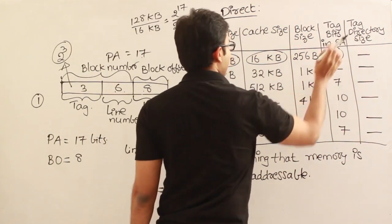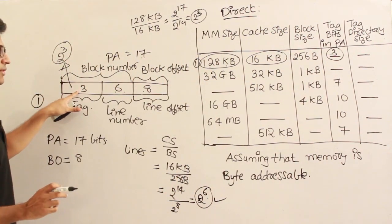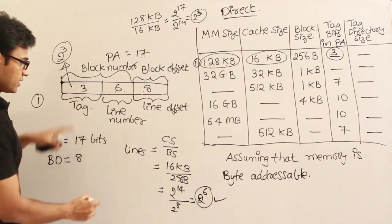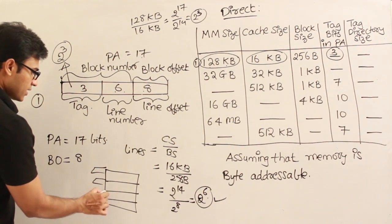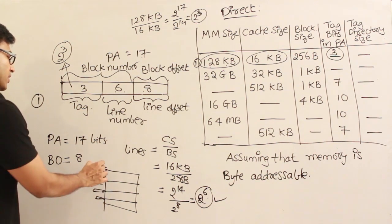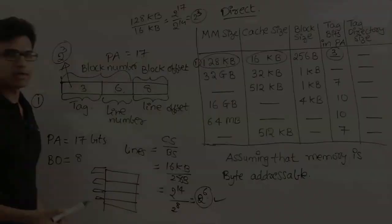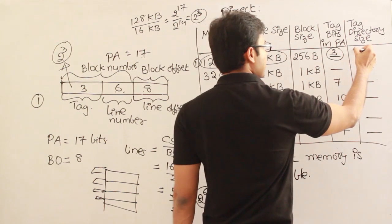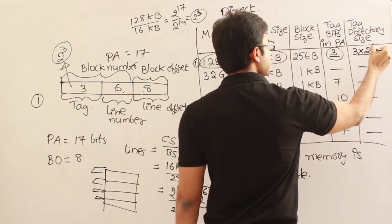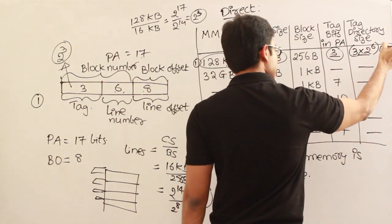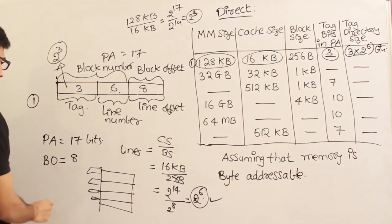Now for the tag directory size: each tag is 3 bits, and every cache line has a tag attached. There are 2^6 lines. Therefore the tag directory size is 3 × 2^6 bits.